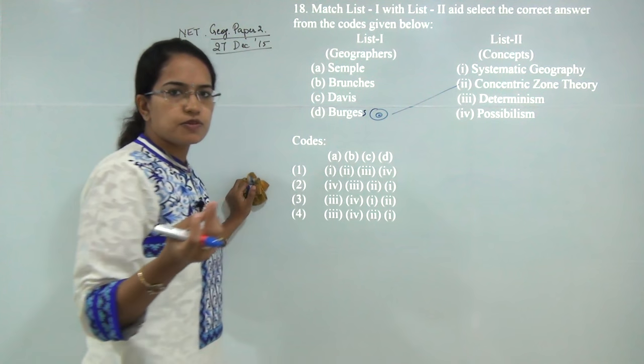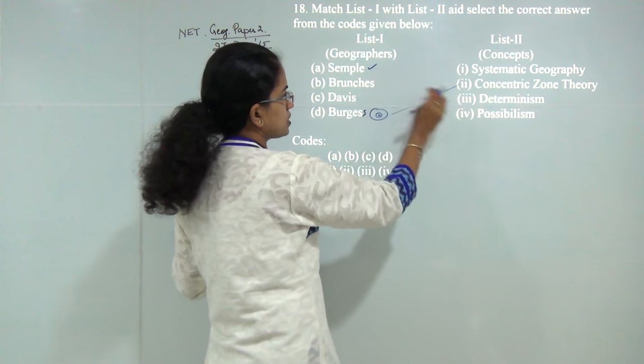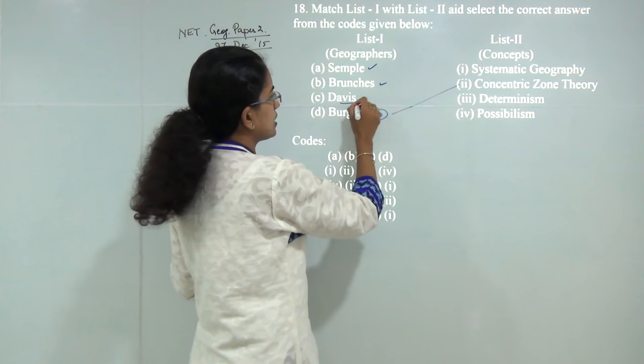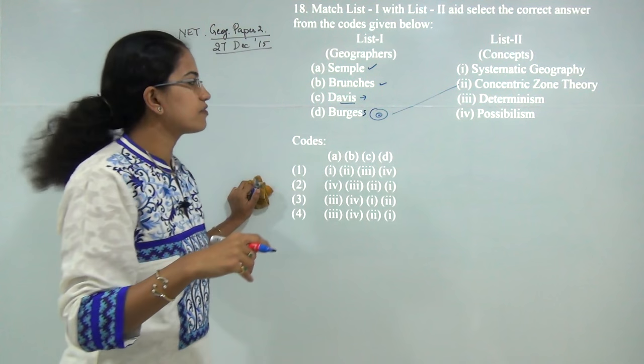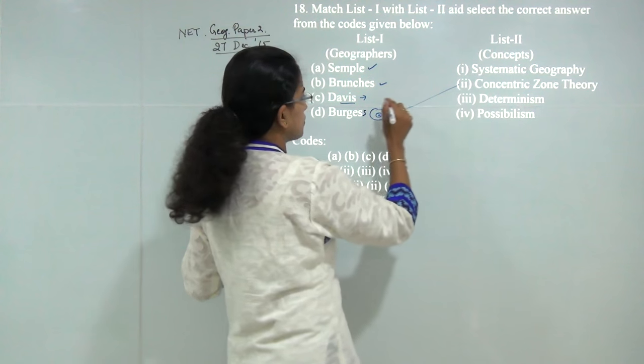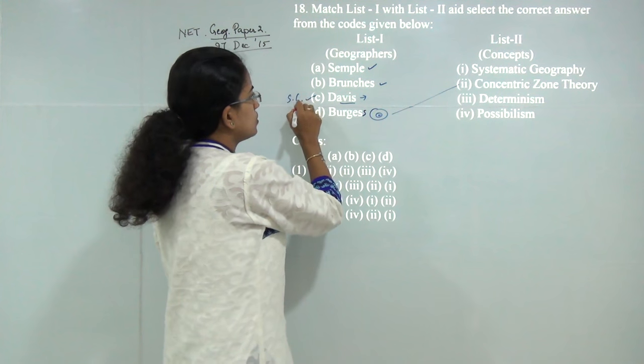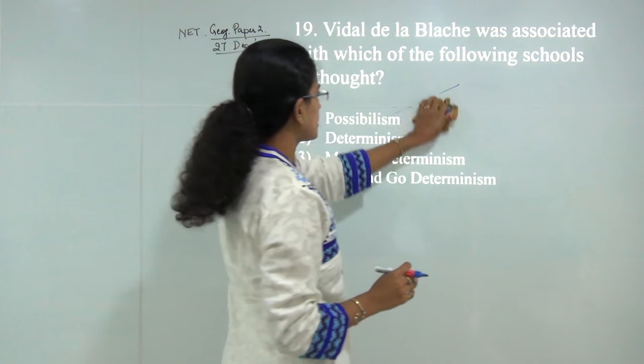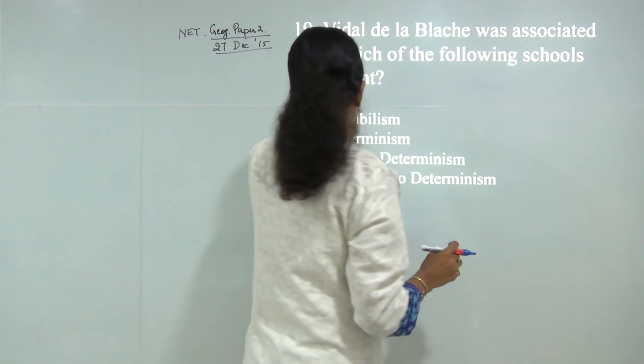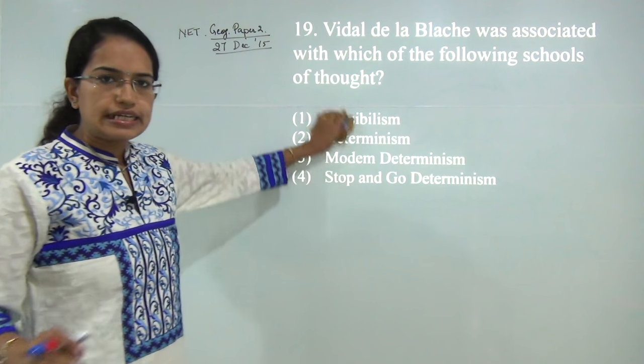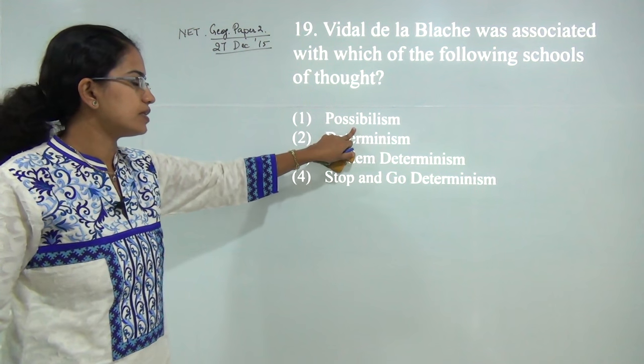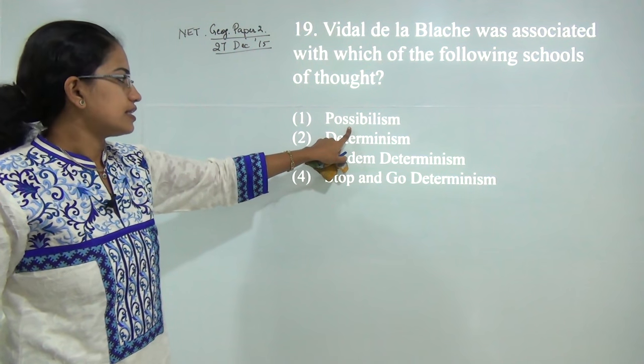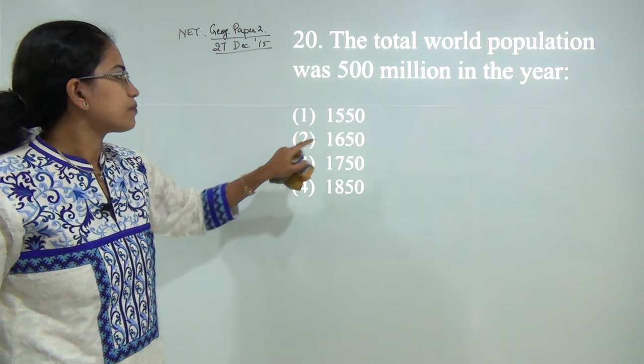When we talked about determinism and possibilism, it's well known that Semple was a determinist, Vidal de la Blache was possibilist, and Davis talked about geomorphic cycles and gave systematic geography. Systematic geography corresponds to Davis—that's the correct match. Vidal de la Blache was a proponent of possibilism, believing that man explores possibilities for growth rather than considering environment as a limiting factor.